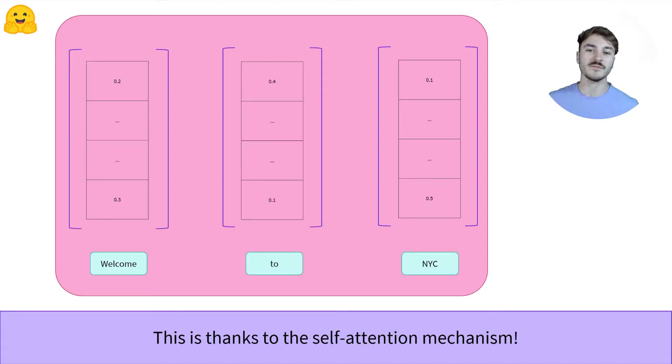The self-attention mechanism relates to different positions or different words in a single sequence in order to compute a representation of that sequence.